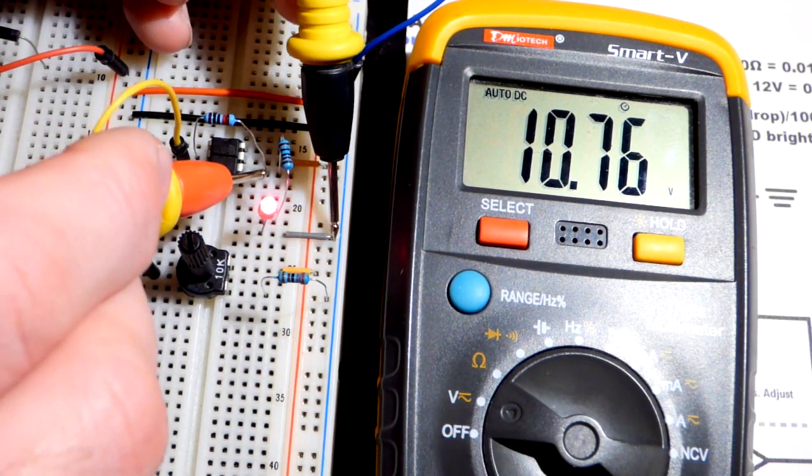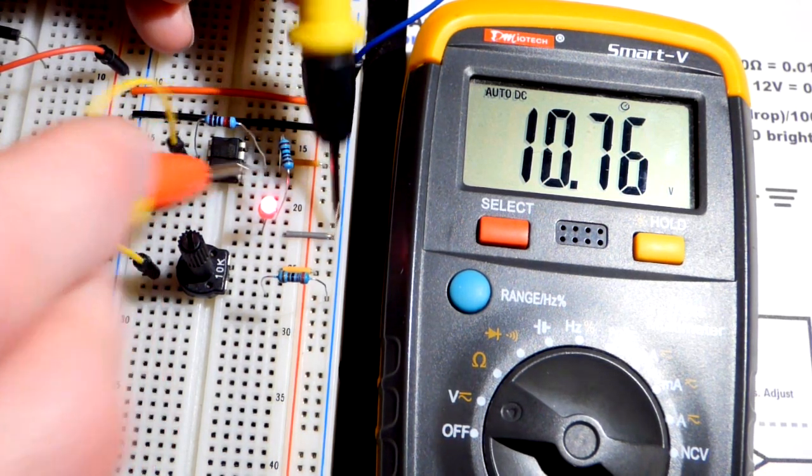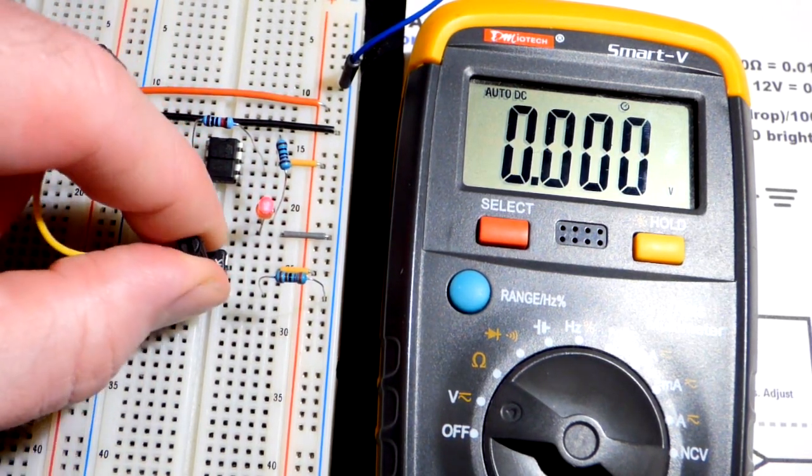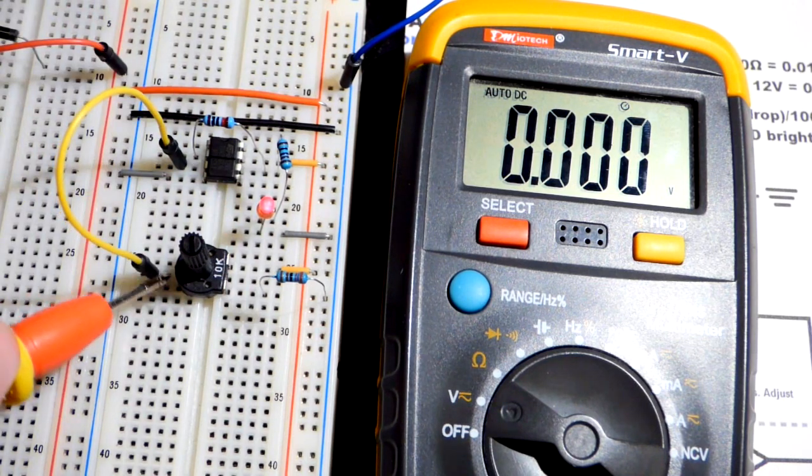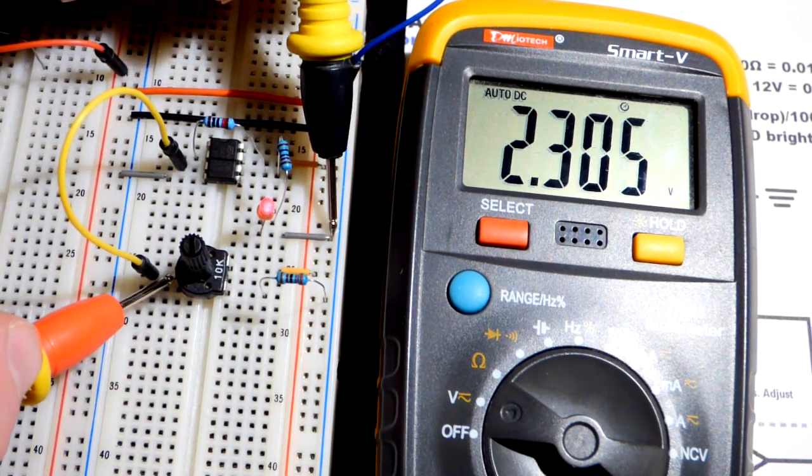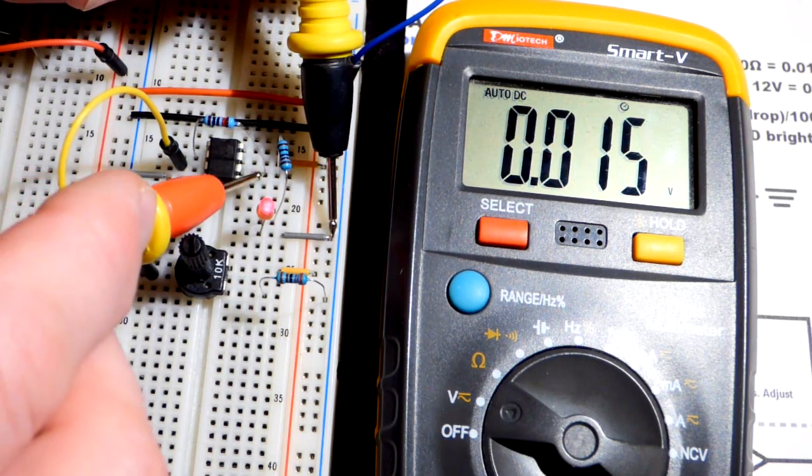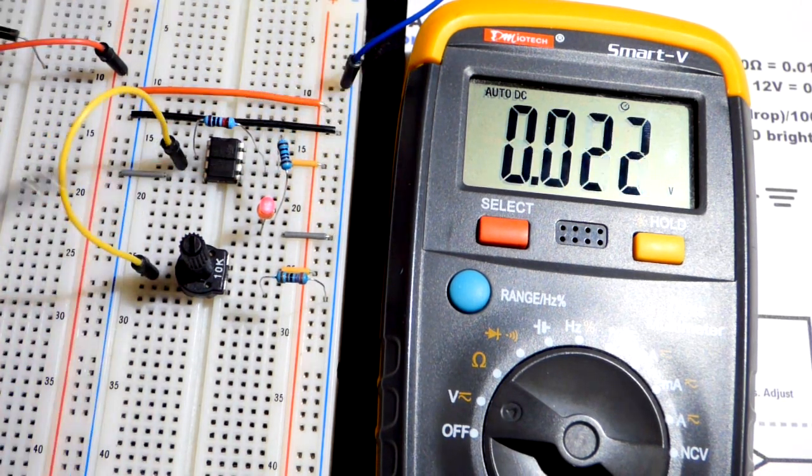Up to about 11, somewhere around 11, 11.5, we should probably be okay. Let's go down to the other end, all the way, just up a little bit. So there you can see 2.3 volts, and 2.3 volts out there.